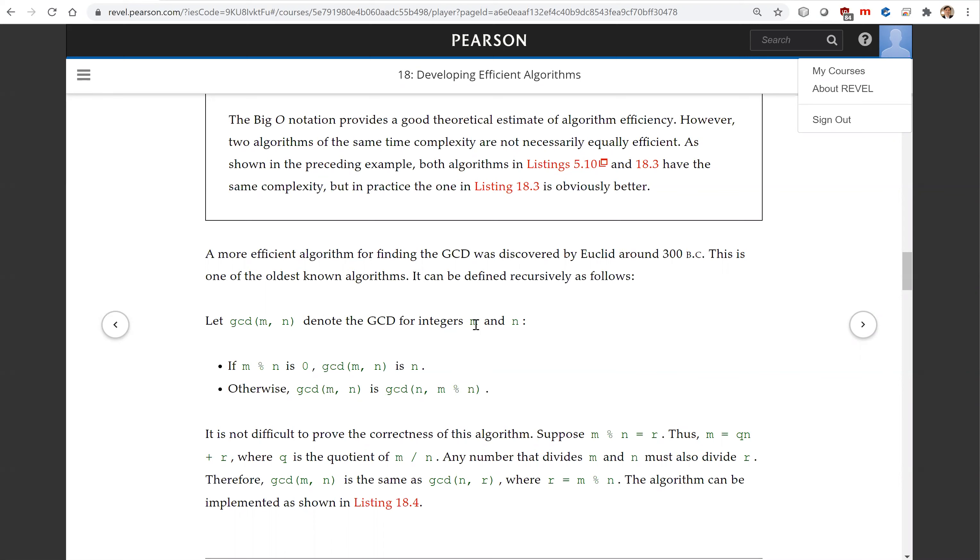The algorithm is described recursively as follows: For GCD(M, N), if M remainder N is zero, then GCD(M, N) is N. Otherwise, GCD(M, N) is GCD(N, M remainder N).